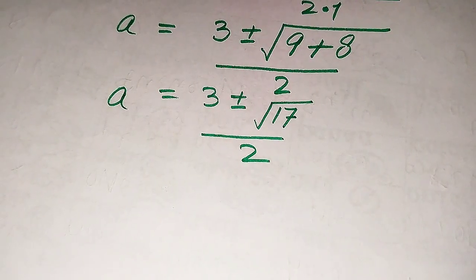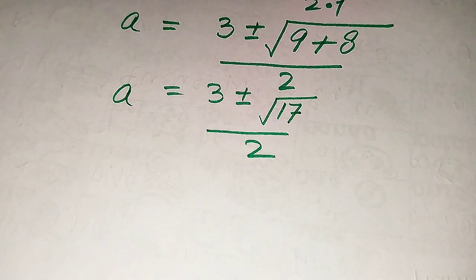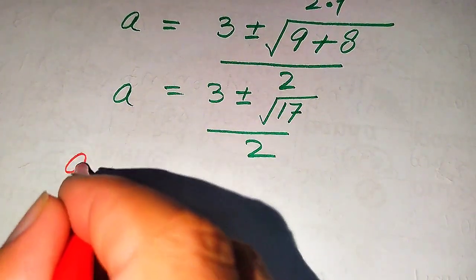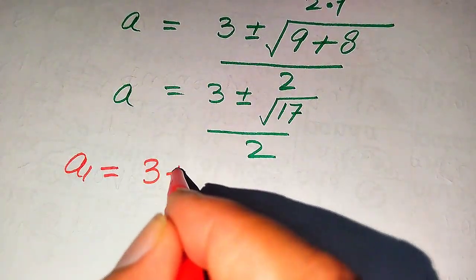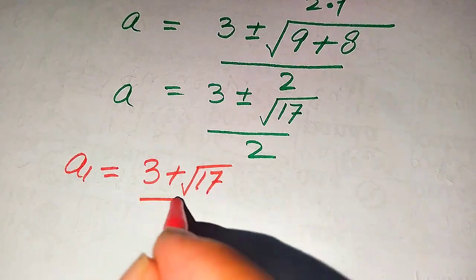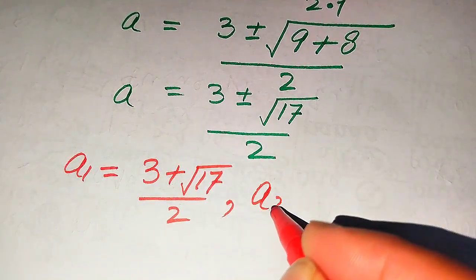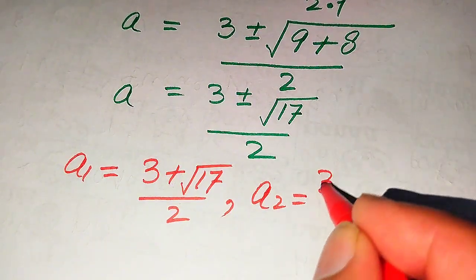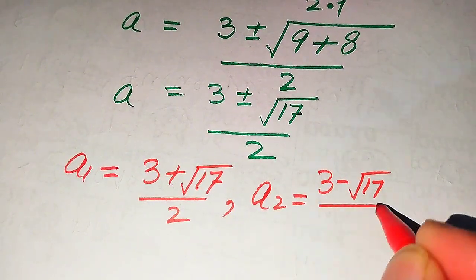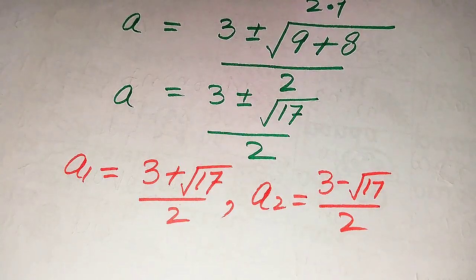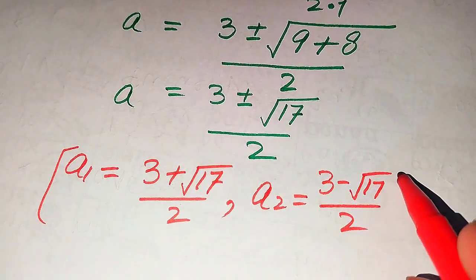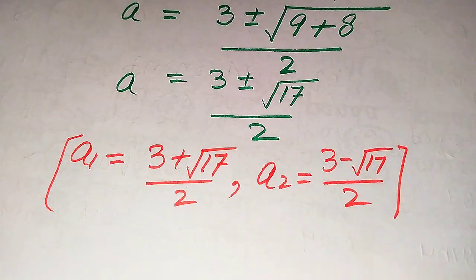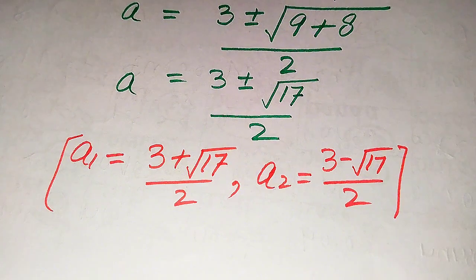There are two roots of the given equation. The first root is (3 plus square root of 17) divided by 2, and the second root is (3 minus square root of 17) divided by 2. These are the two final solutions of the given equation. Thank you so much for watching this video — please subscribe to my channel for more exciting videos.